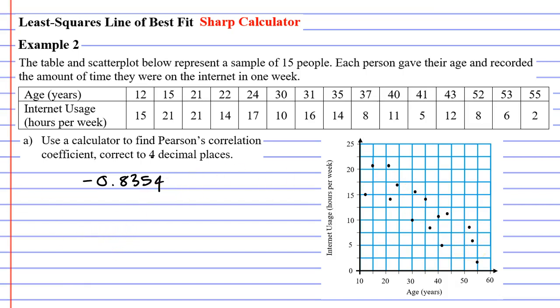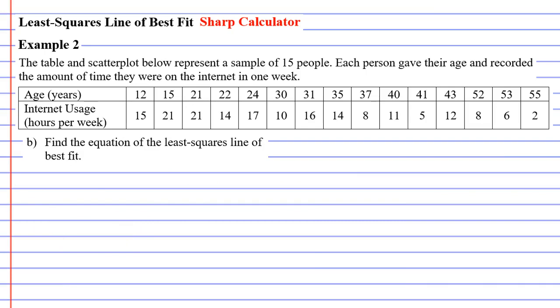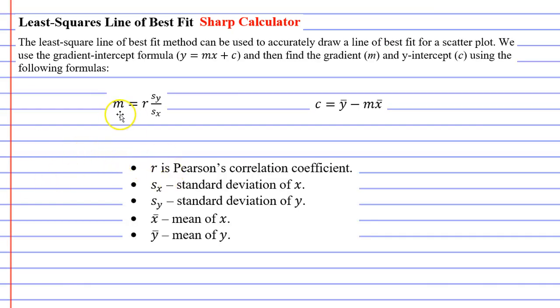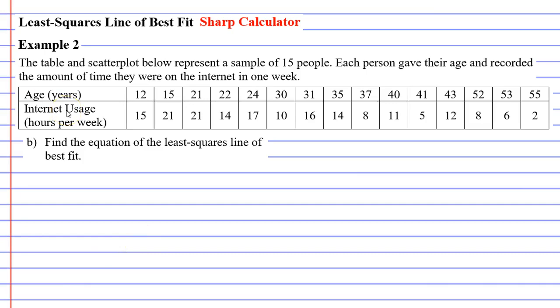So we'll now move on to question B, and this is our challenging one. We're finding the equation of the least squares line of best fit, which means that we have to refer to our formulas and these symbols. If we look at our symbols, we've got R, which is Pearson's correlation coefficient we've already calculated. Sx, which is the standard deviation of x. Sy, the standard deviation of y. x with a bar above it, the mean of x, and y with a bar above it, the mean of y. So I'm going to show you how to find these. It's actually not that difficult, as long as you keep the data entered into your calculator.